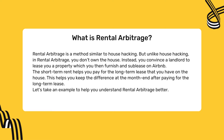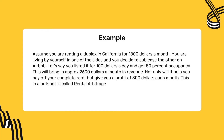Let's take an example to help you understand rental arbitrage better. Assume you are renting a duplex in California for $1,800 a month. You are living by yourself in one of the sides and decide to sublease the other on Airbnb. Listed at $100 a day with 80% occupancy, this brings in approximately $2,600 a month in revenue — paying your rent and giving you a profit of $800 each month. This, in a nutshell, is rental arbitrage.